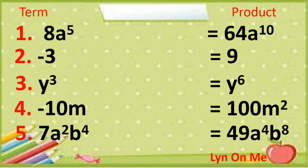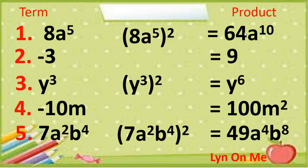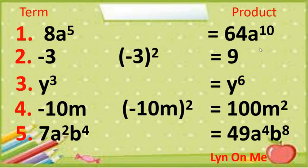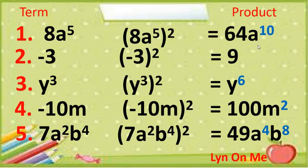The square of a positive or a negative term is always positive. When you square a negative term, the result is still positive. Also observe the exponents of the variables of the perfect squares — they are all even numbers. So if the exponents are 1, 3, 5, 7, or 9, the product will not result in a perfect square.